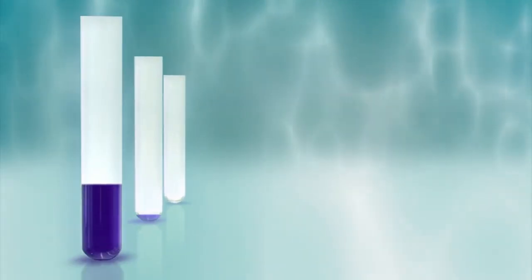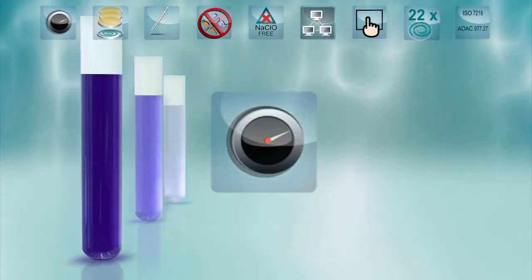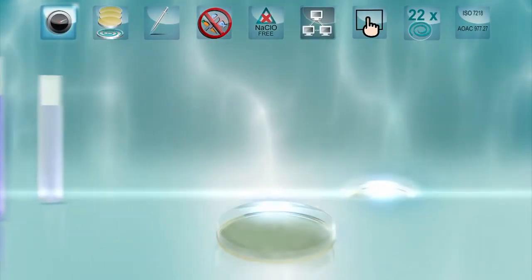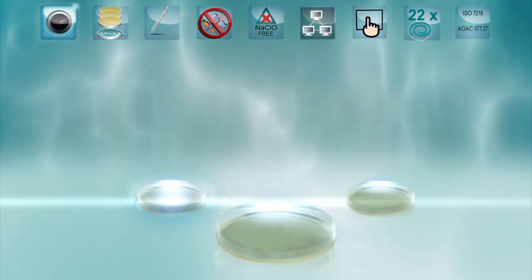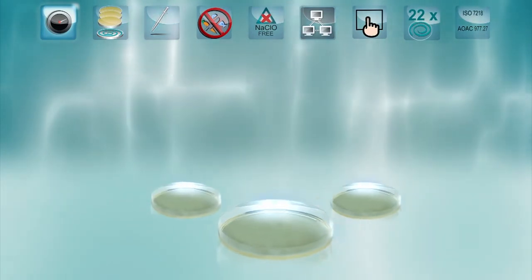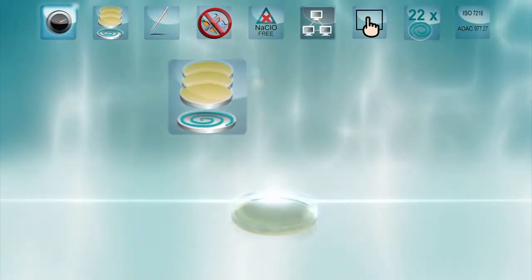The spread plate technique requires time-consuming serial dilutions. Spiral plating offers an alternative that reduces the time and Petri plates required. A single spiral spread spares the inoculation of three Petri plates.